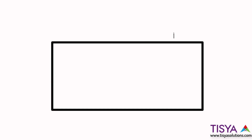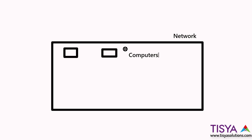Welcome to this overview video about networking. A network — represented here by this rectangle — is just a group of devices. It could be a bunch of computers, represented by these rectangles, or it could be other devices like a printer or a scanner.